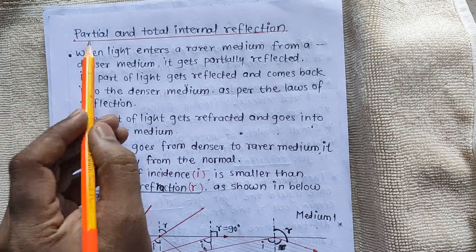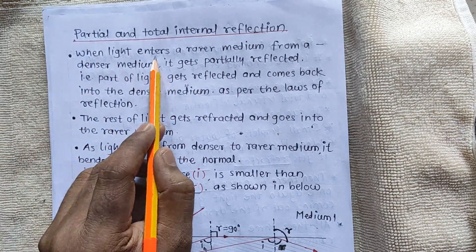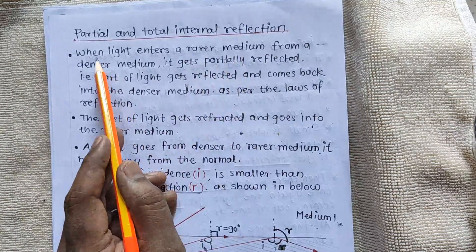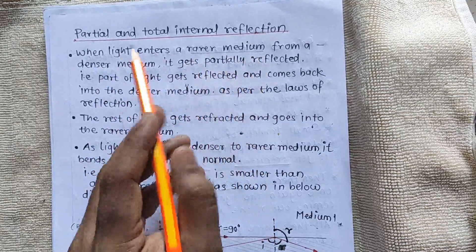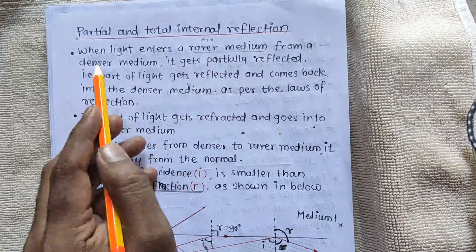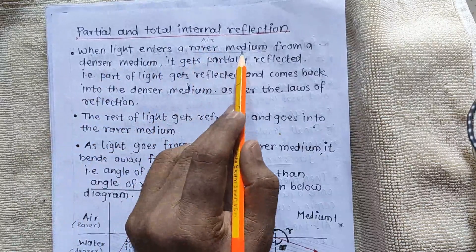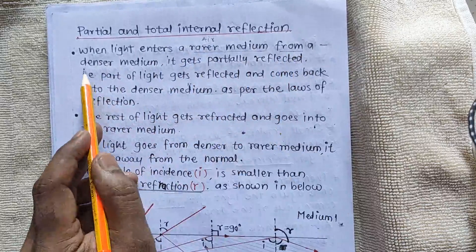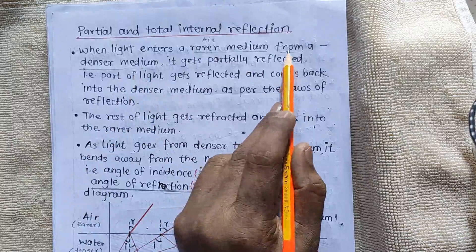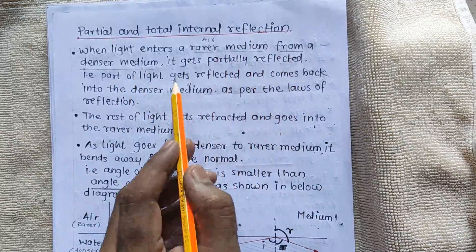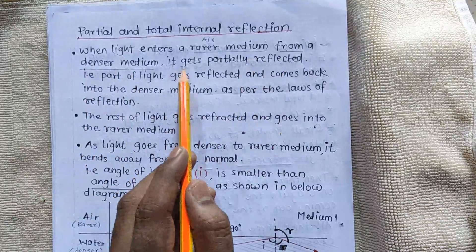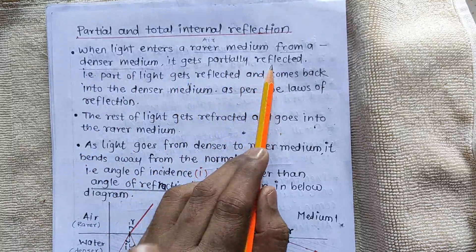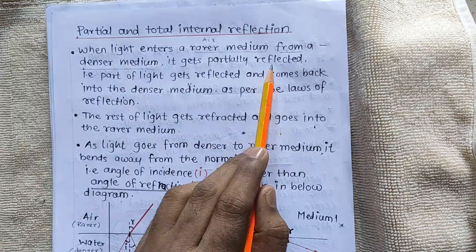So this is the start of our topic. When light enters a rarer medium from a denser medium — rarer medium being air — we are not talking about refraction here, we are talking about reflection.